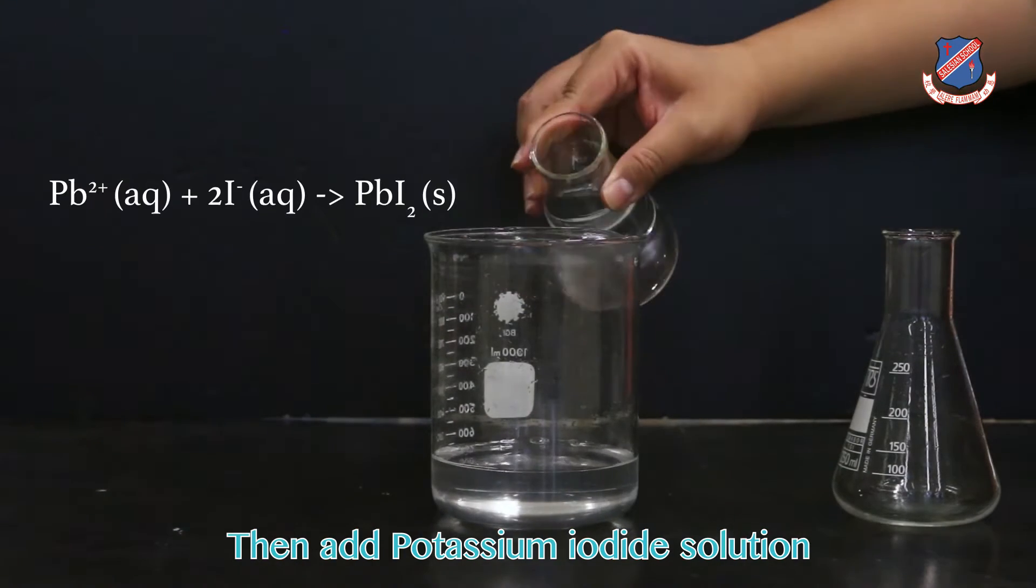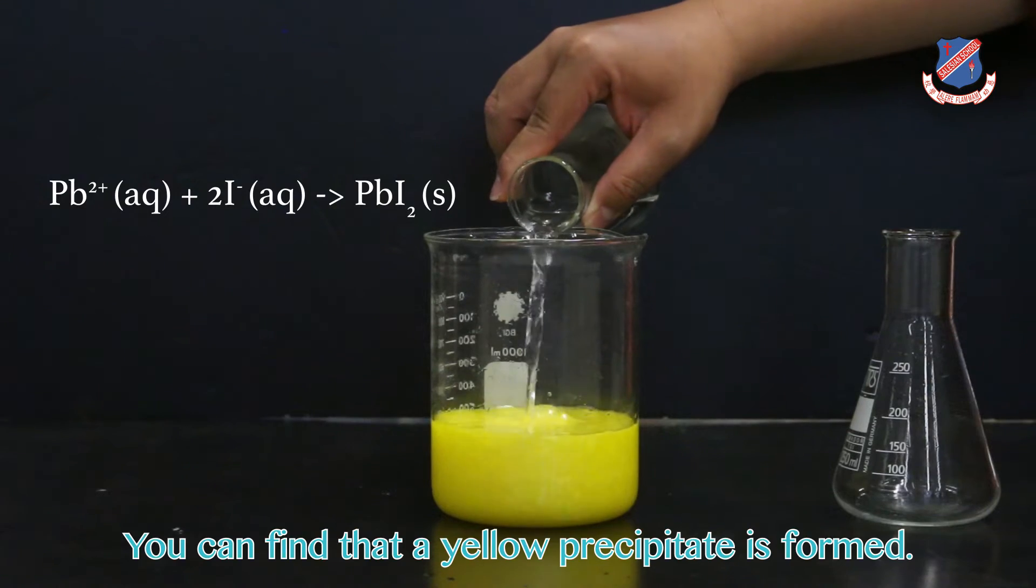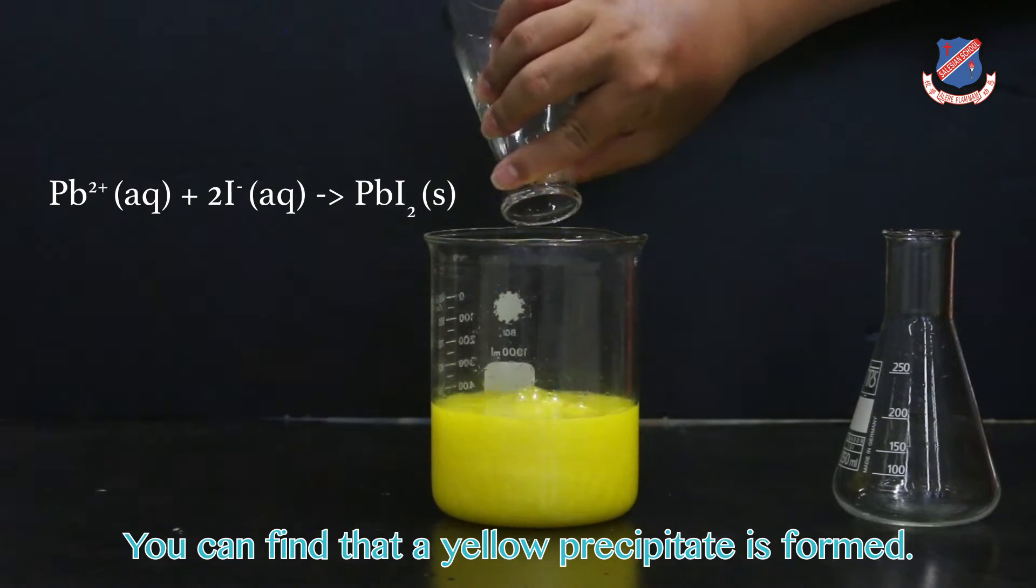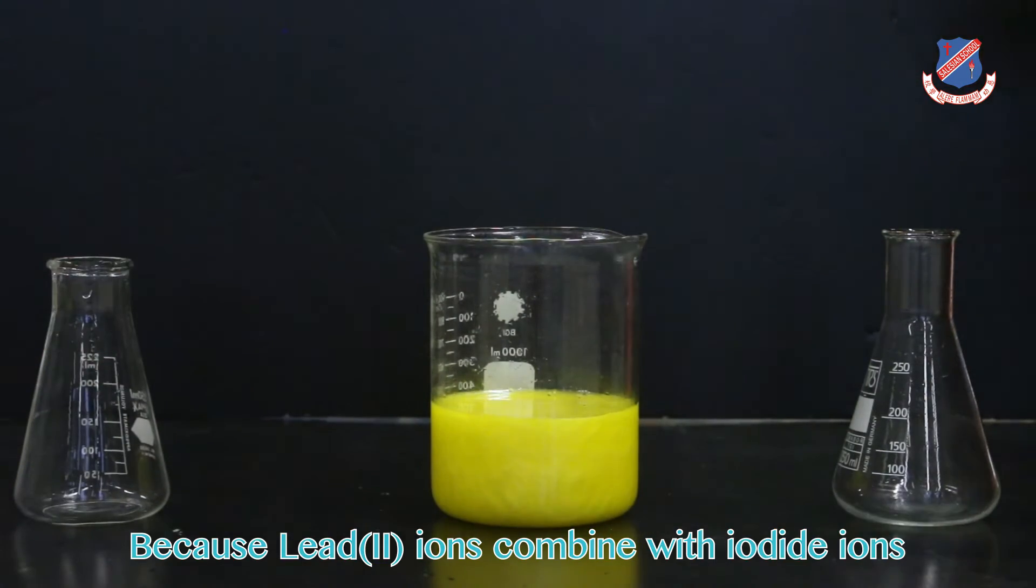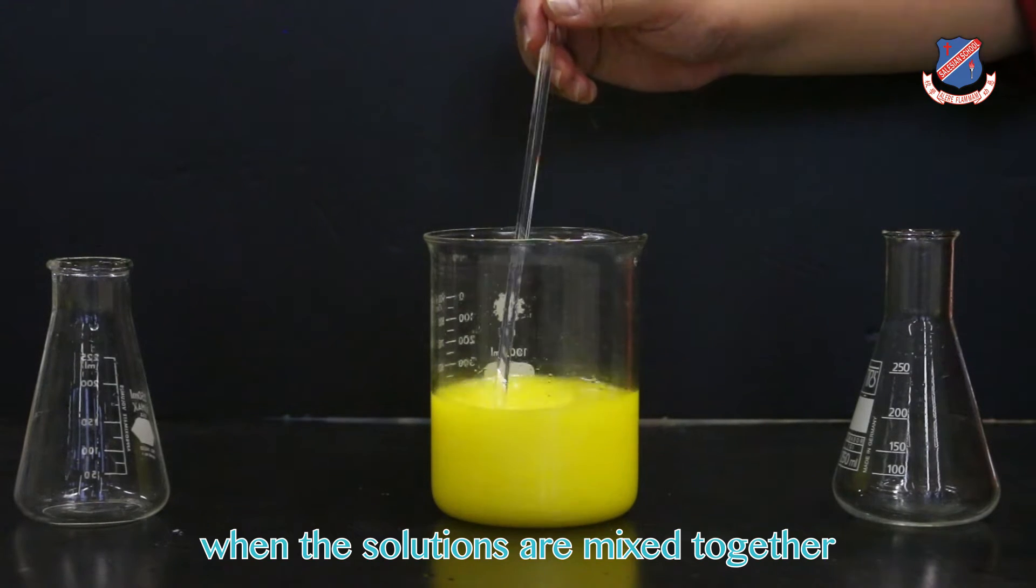Then, add potassium iodide solution into lead(II) nitrate solution. You can find that a yellow precipitate is formed because lead(II) ions combine with iodide ions when the solutions are mixed together.